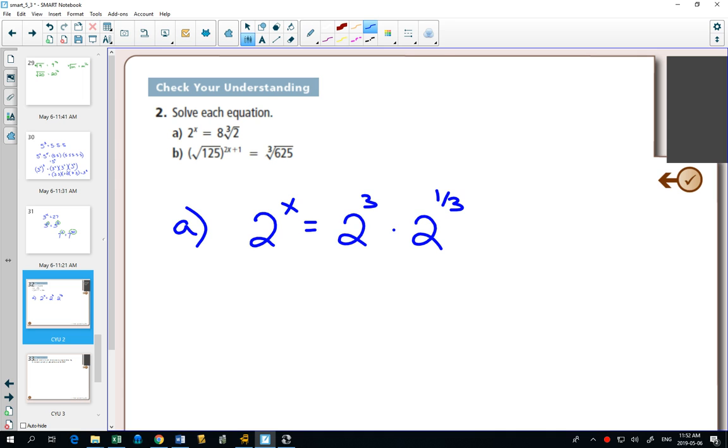So now all the bases are the same, but we don't have a single power on the left side and the right side. So we have to use more exponent laws. What's the exponent law when you're multiplying and you have the same base? You add the exponents.